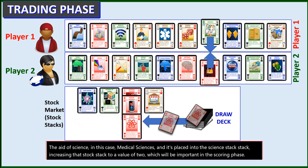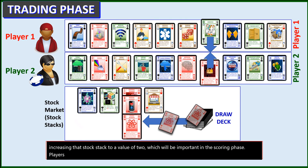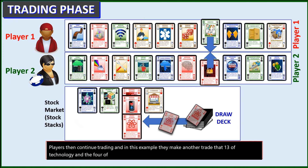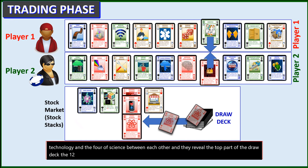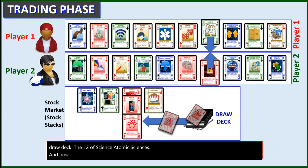Players then continue trading, and in this example they make another trade: the 13 of technology and the four of science between each other. They reveal the top card of the draw deck — the 12 of science, atomic sciences — and now that stock stack has reached a value of three. So trading pauses.